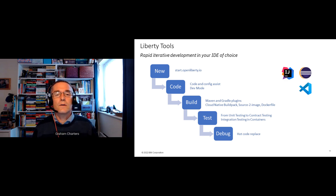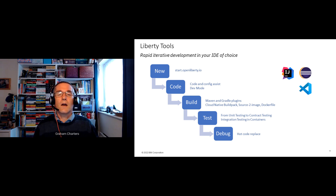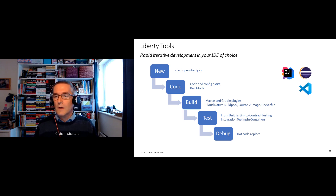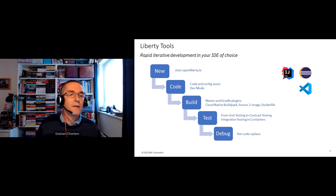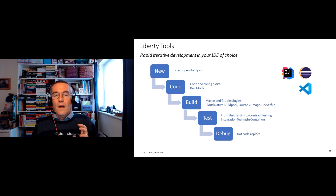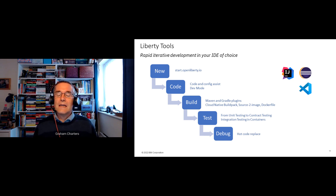We have a starter at start.openliberty.io where you can generate a new starter project with initial code, runtime configuration, and a Dockerfile for building the container image. For writing code, we provide content assist and configuration assistance in Eclipse and are adding these to Visual Studio Code and IntelliJ as well. We support the two leading build tools — Maven and Gradle — so you can easily build applications using the Maven and Gradle plugins.